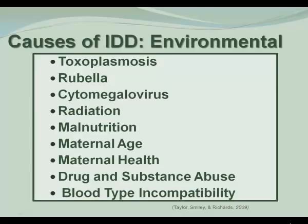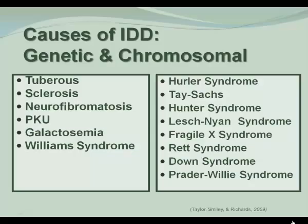Here is a list of more genetic and chromosomal causes of IDD. PKU stands for Phenylketonuria. It is an inherited metabolic disease that can cause severe IDD. What happens is the infant cannot metabolize milk and the body turns milk into a toxin that attacks the brain. Nowadays this is easily addressed with early blood testing, and then the baby is put on a different type of formula.